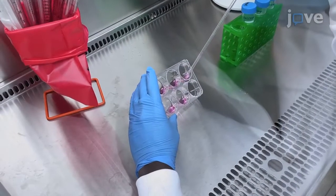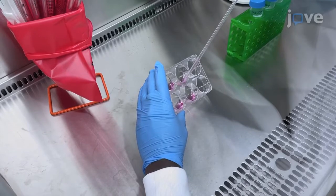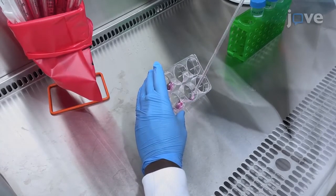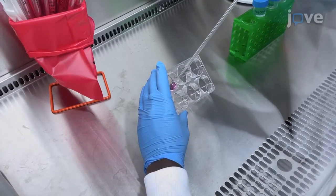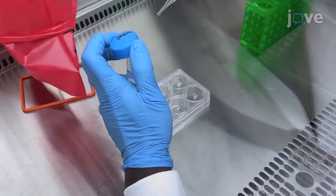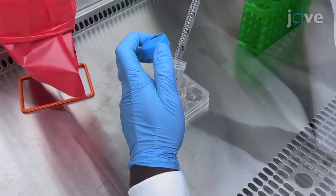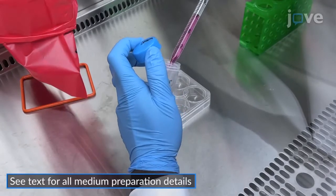To set up a feeder-free human iPSC culture, aspirate the residual solution of basement membrane matrix from pre-coated plates and wash the wells three times with 1 to 2 milliliters per well of warmed basal medium.